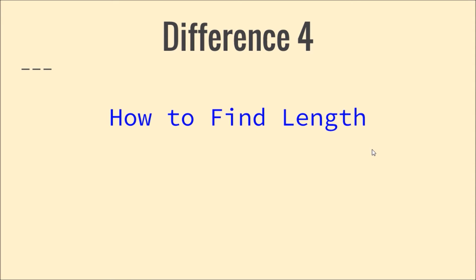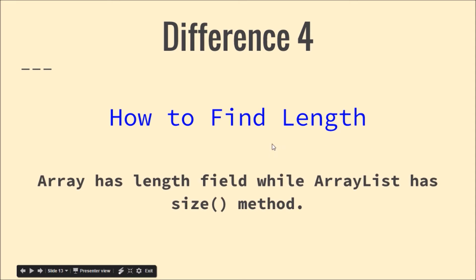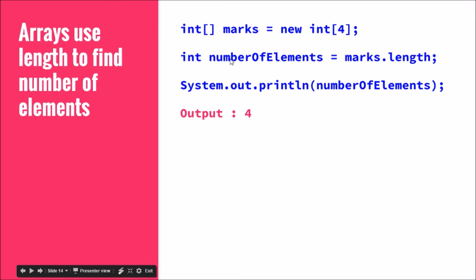The fourth difference is how to find the length. For arrays, there is a field called 'length' using which we can find the length, whereas ArrayList has a 'size' method. For example, 'marks.length' will return four. If you say 'System.out.println(marks.length)', it will print four.